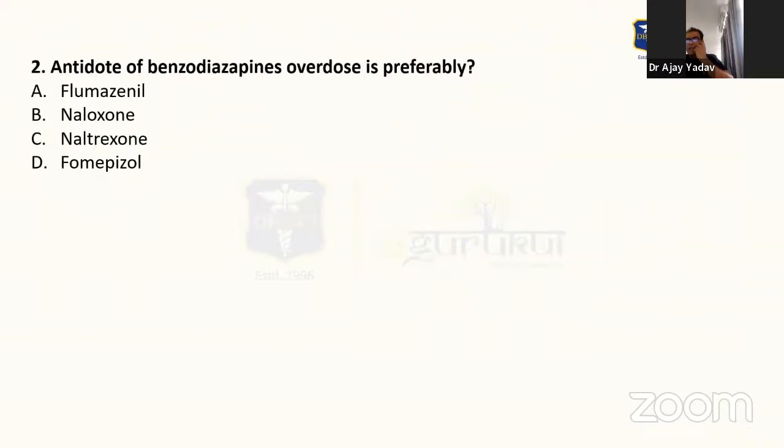Question number two. Antidote of benzodiazepine overdose nowadays is preferably flumazenil, naloxone, naltrexone, or fomepizole. Benzodiazepine overdose you all know is treated by flumazenil.